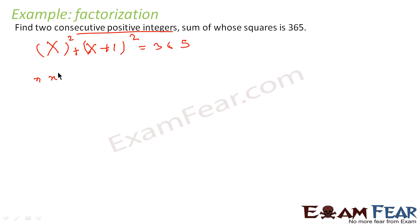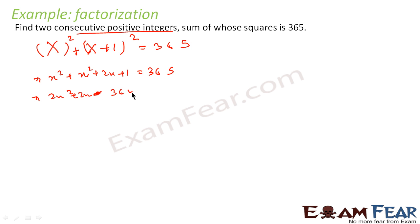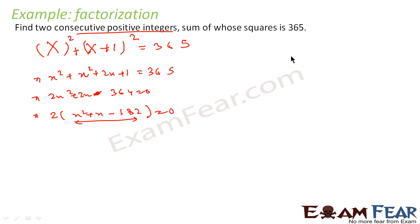Let me solve this: x squared plus x squared plus 2x plus 1 equals 365, or 2x squared plus 2x minus 364 equals 0. Taking 2 common: 2 times (x squared plus x minus 182) equals 0. Now I have to factorize such that a plus b equals 1 and a times b equals minus 182.